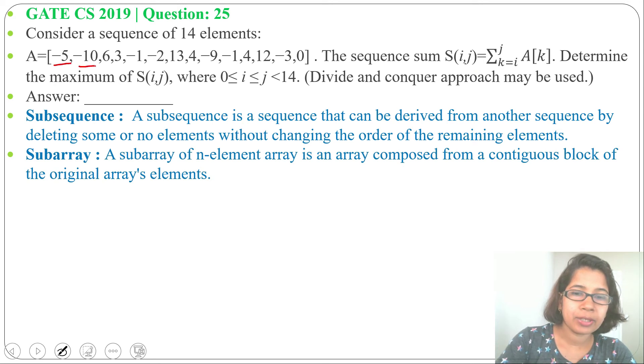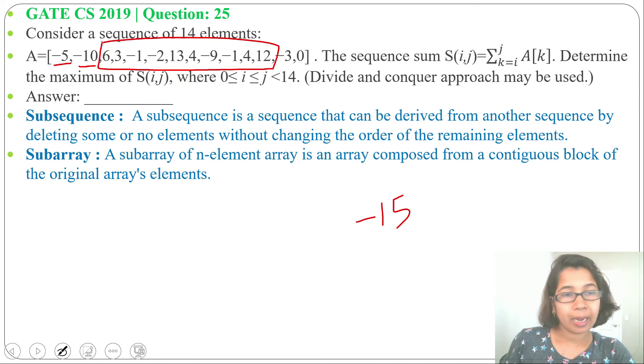So if we choose minus 5 and minus 10, then it will be minus 15. Whatever sum, minus 15, it will be less. So what we'll do is start from 6 and we'll do addition till 12. Now what will be i and what will be j?